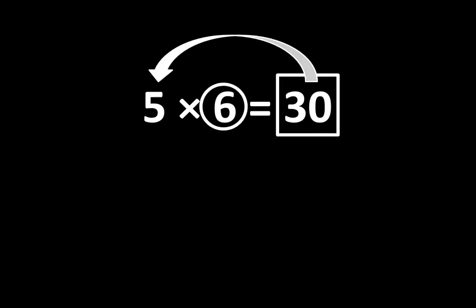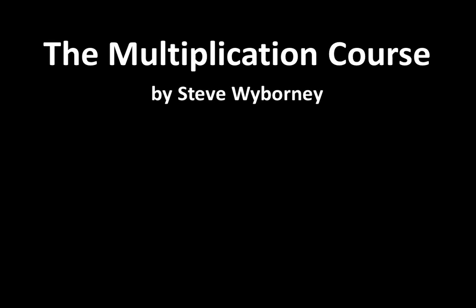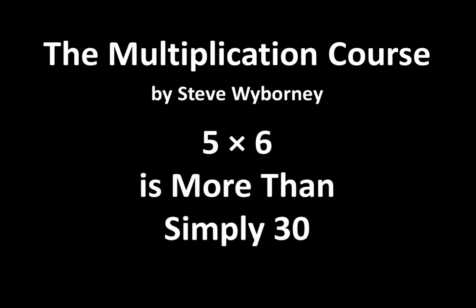As you can see, there are many relationships among these numbers. 5 times 6 is equal to 30, and that is an important idea. But as you can tell, it's not the end of the story. There are many more relationships, many more connections, and many more ideas waiting to be discovered as we take a closer look at multiplication. This is the Multiplication Course. My name is Steve Wyborny, and this is a reminder that 5 times 6 is more than simply 30.